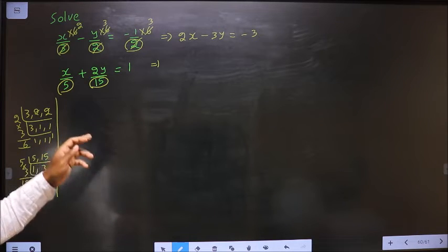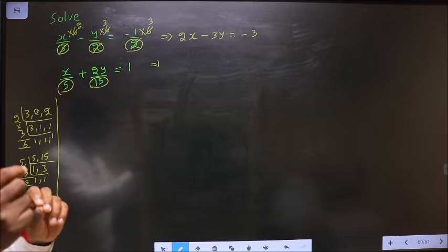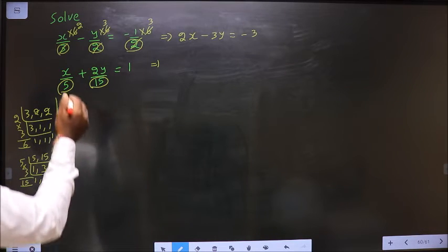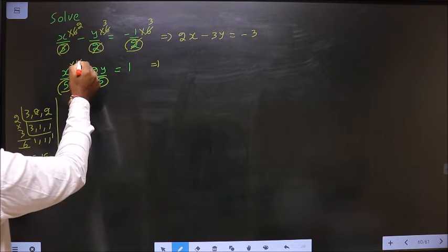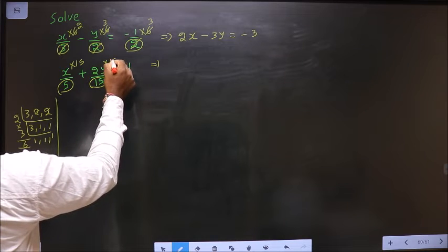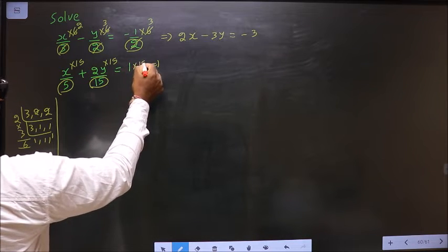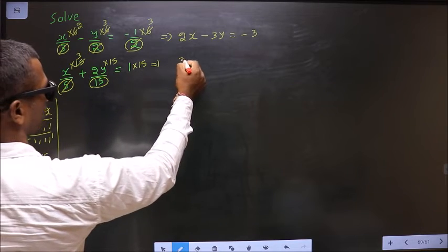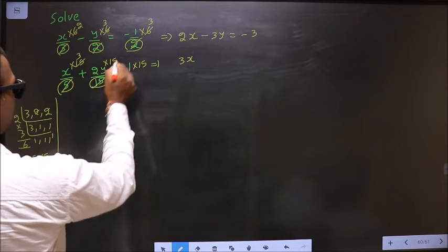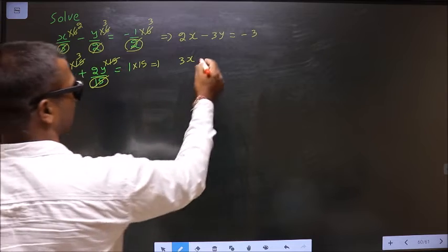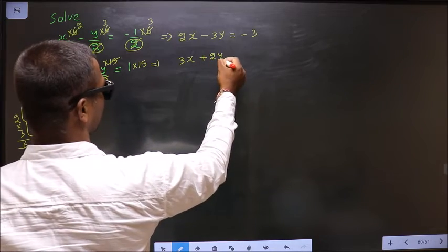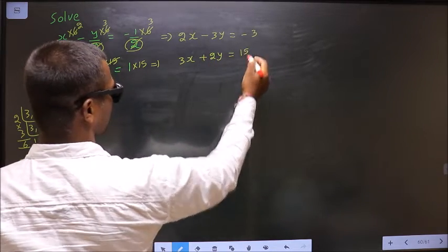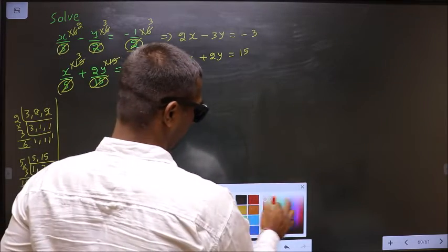So now to remove the denominator, multiply with 15 to each term. Into 15, into 15, into 15. So here 5 ones, 5 threes. So 3x. This cancels out. Plus 2y equal to 1 into 15 is 15. Okay, now.